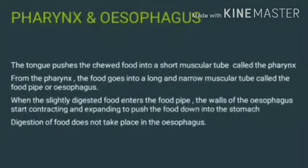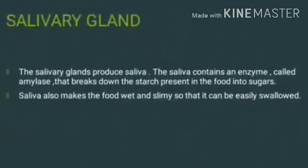Next is the pharynx and esophagus. The tongue pushes the chewed food into a short muscular tube called the pharynx. From the pharynx, the food goes into a long, narrow muscular tube called the food pipe or esophagus. The walls of the esophagus contract and expand to push the food down into the stomach. Digestion of food does not take place in the esophagus — it simply moves food to the stomach.